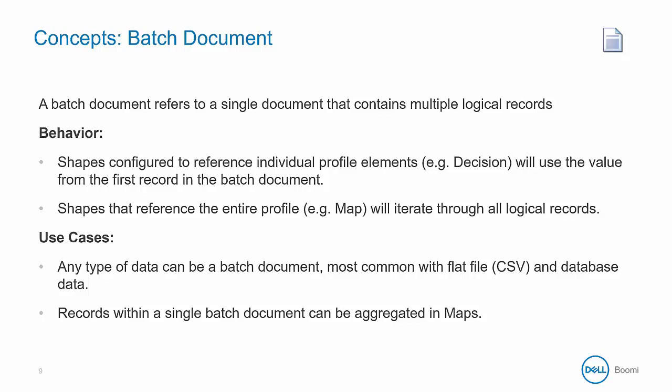A batch document is when multiple logical records move through the Boomi process as a single document. These can be formed when documents are read in through a connector or grouped together in a data process shape as part of the process. It's important to note that some shapes are only going to be able to reference or evaluate the first record in a batch document. The decision shape is one of these — it will send the entire document down the true or false path based upon only the first record. Other shapes like the map are able to reference all records and iterate through them. It's most common to batch flat files and database data, but you can also do it for XML or JSON. Records within a single batch document can be aggregated in maps.